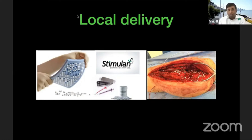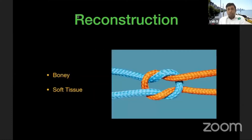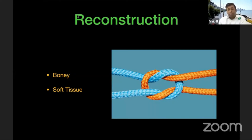Reconstruction will be dealt with by the other two speakers shortly. Suffice to say it has two aspects: bony and soft tissue — both of equal importance. When reconstructing, do not forget about the abductors and stability.